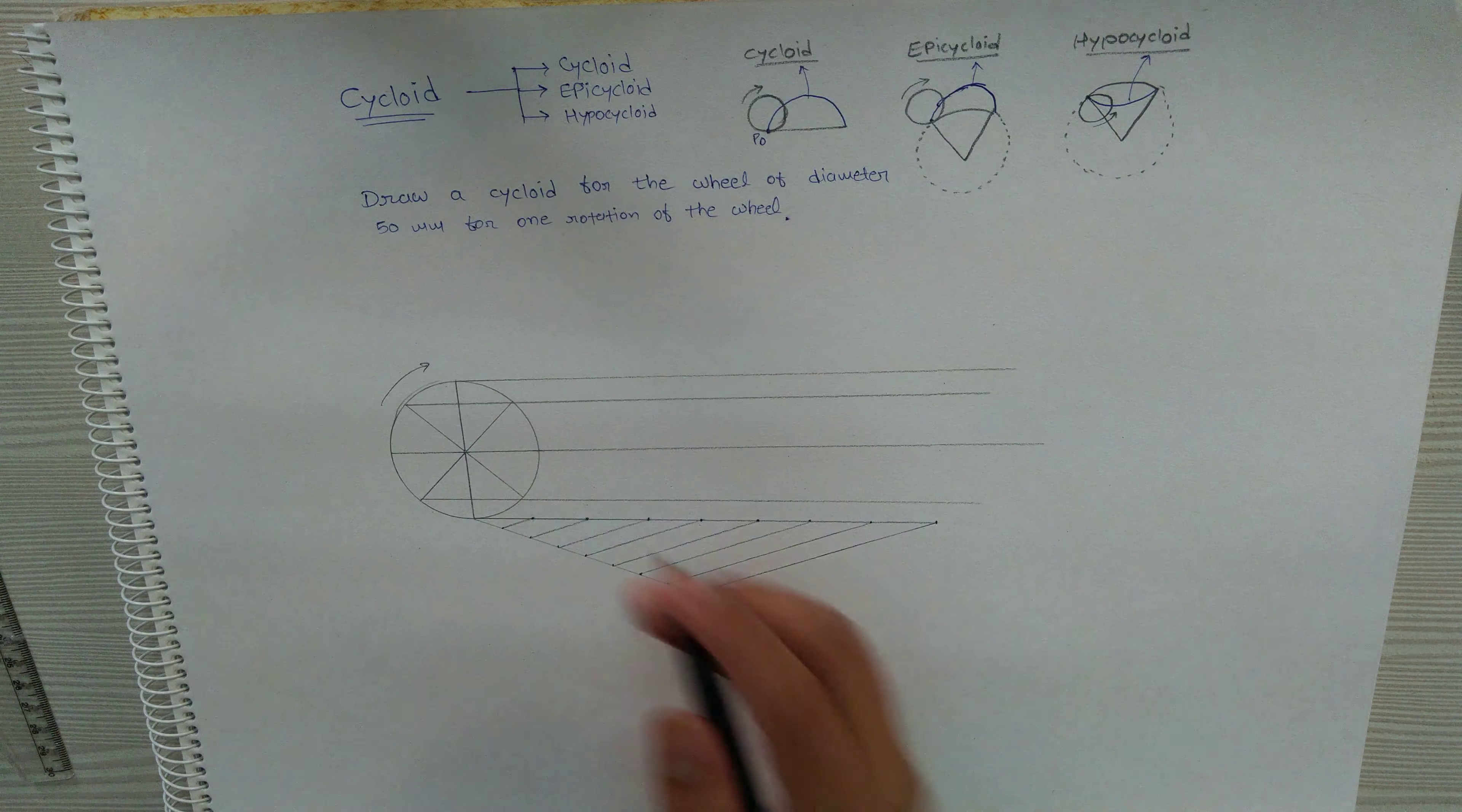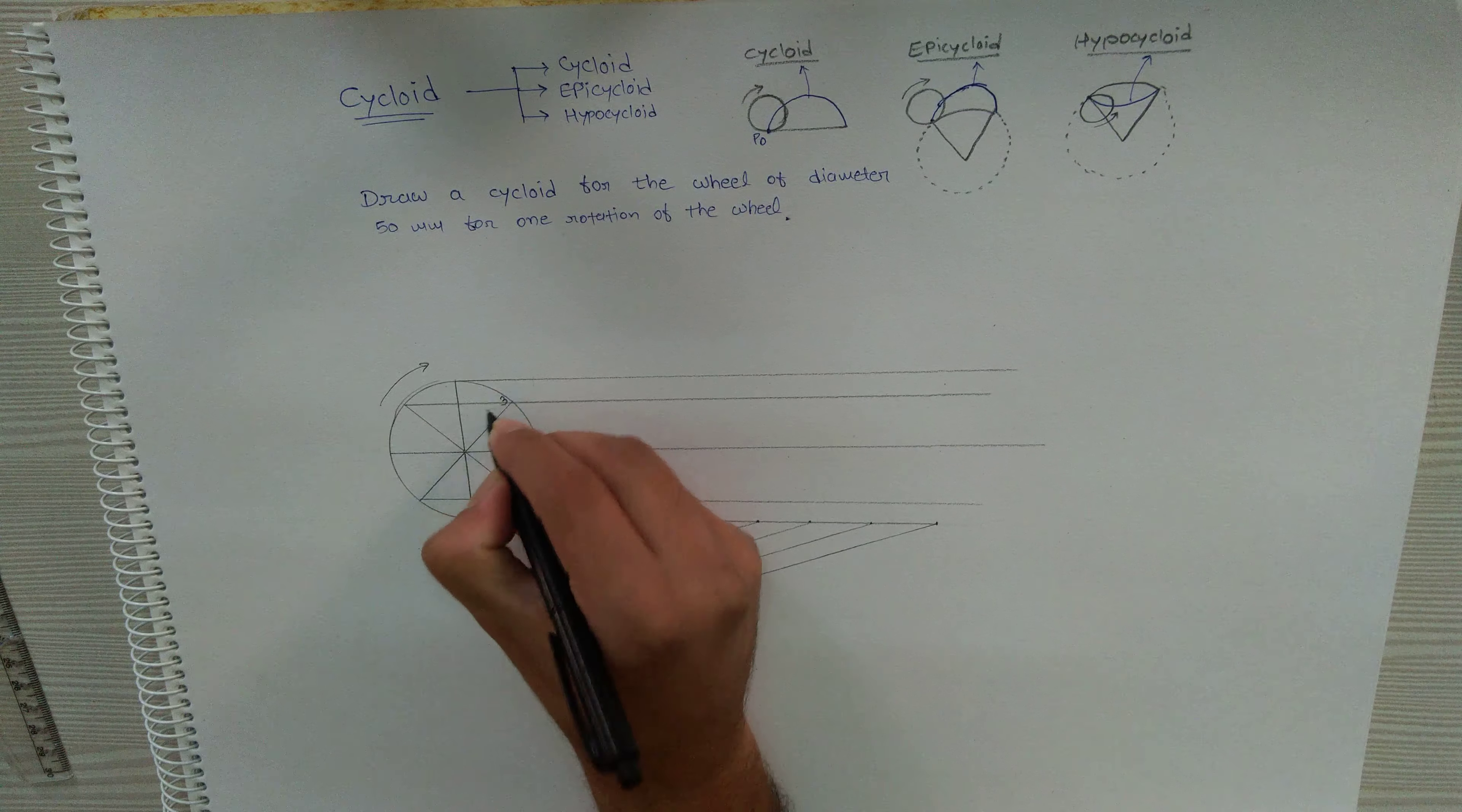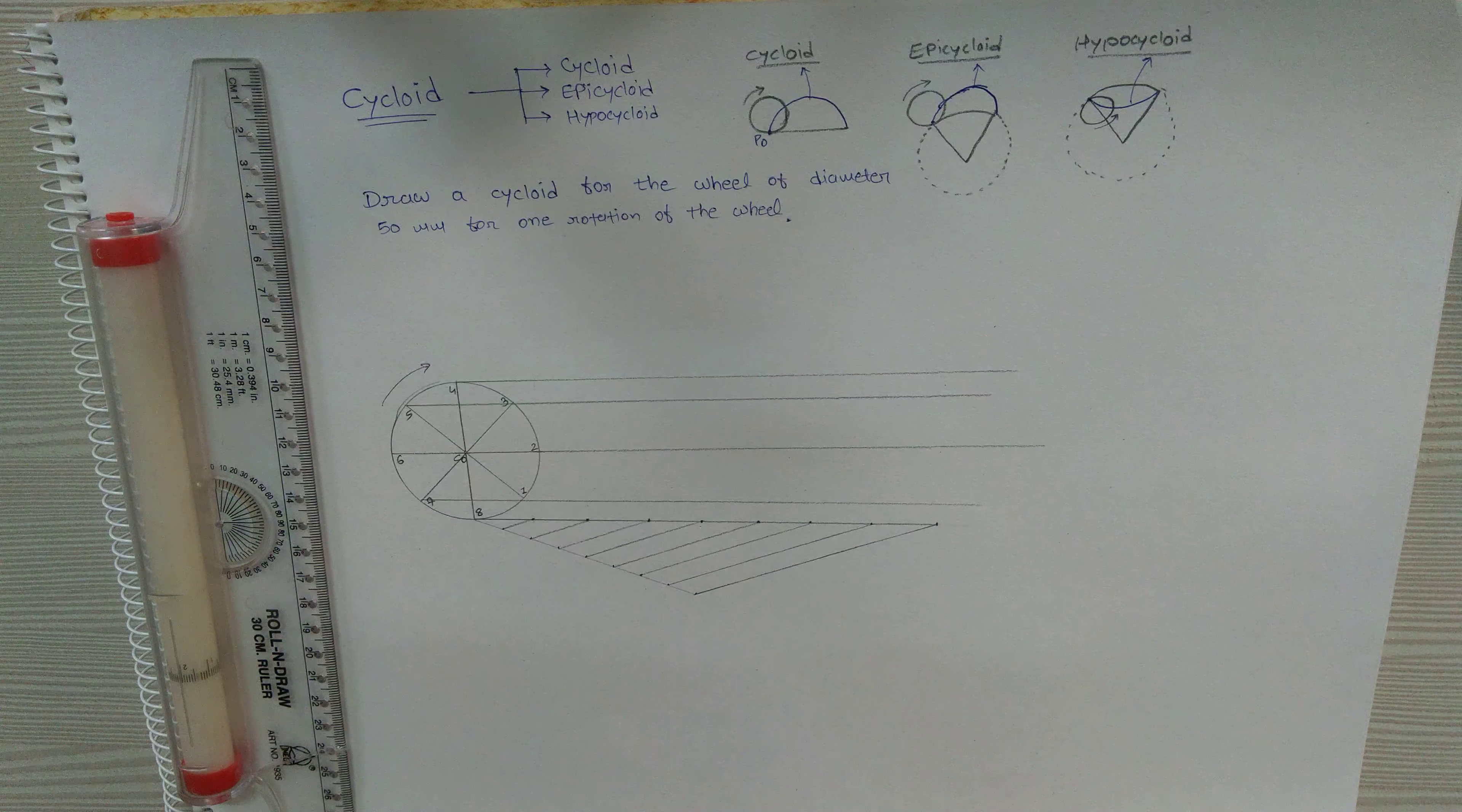See, this circle is rotating and rolling in this direction, so the first point of contact will be this. So here it will be one, here it will be two, three, four, five, six, seven, and eight. Here is c0, the initial position of the center of the wheel.